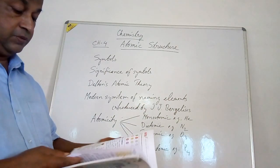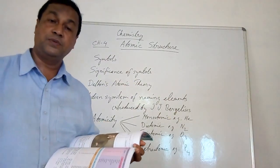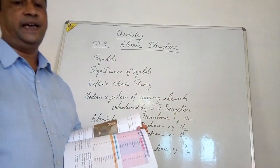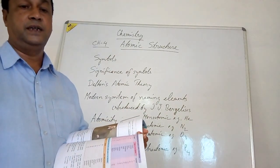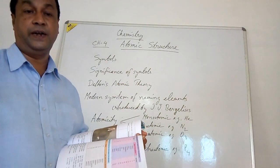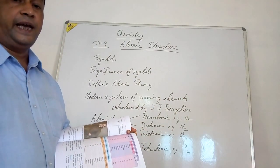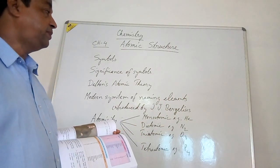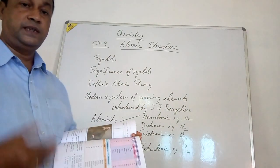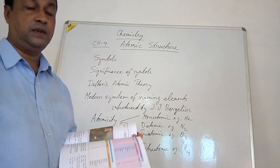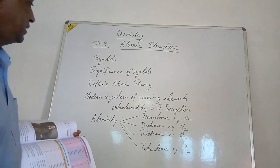For example, the symbol of sodium is Na, written as capital N and small a. This comes from the Latin word natrium, but instead of writing natrium in full, we write Na. This saves time and also gives a short name for the element.